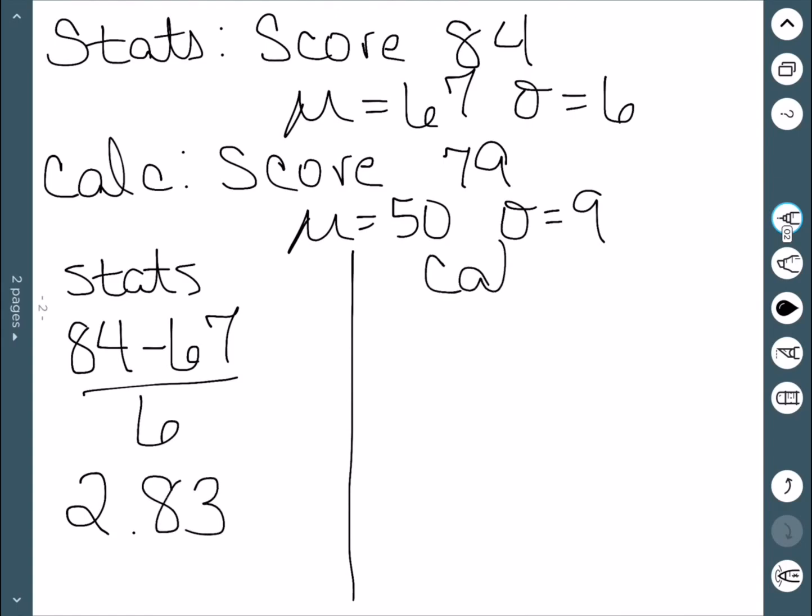Now let's consider how they did on the calculus exam. They had a score of 79, the mean was 50, and the standard deviation was 9. If we work this out, we get a z-score of 3.22.